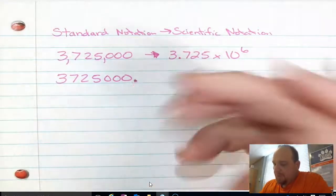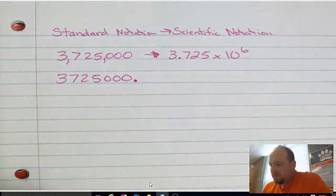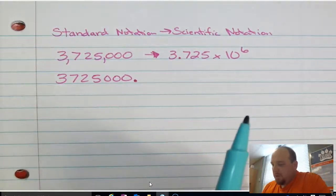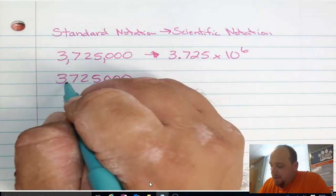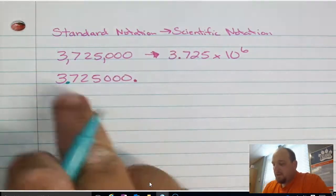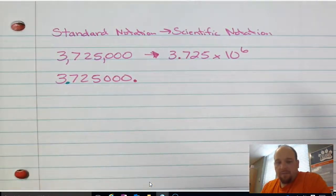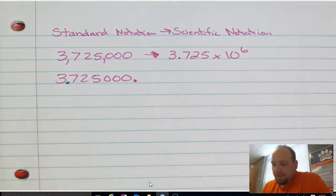Right now, my decimal is right here. And that's what makes it 3,725,000. So where would the decimal go if I have a factor between 1 and 10? It would go right here after the 3. It would go right before the 7. Notice that that would be 3.7 point something or 3.7 something.